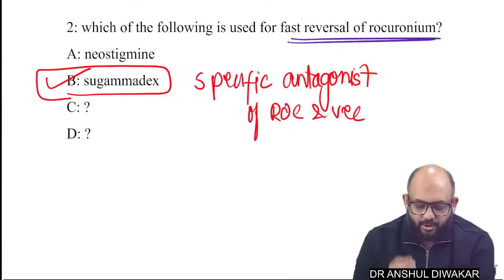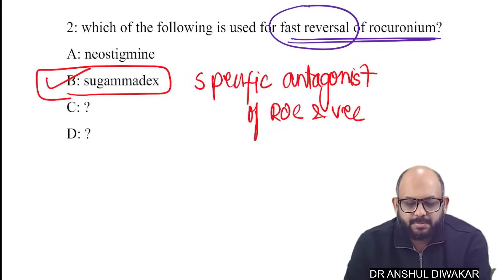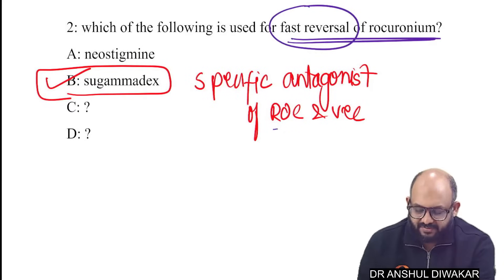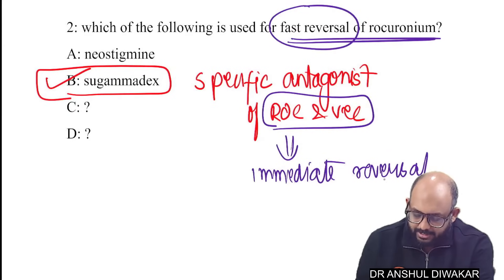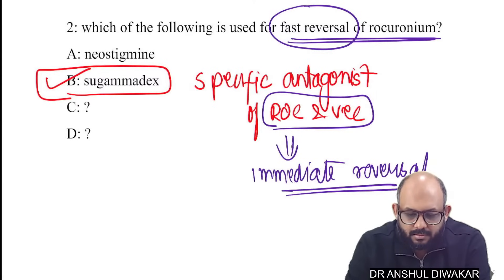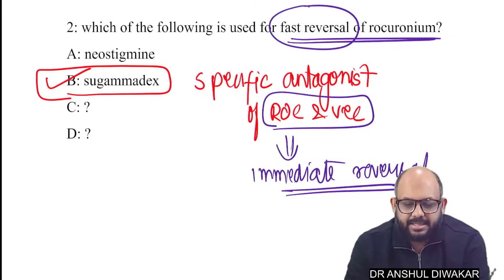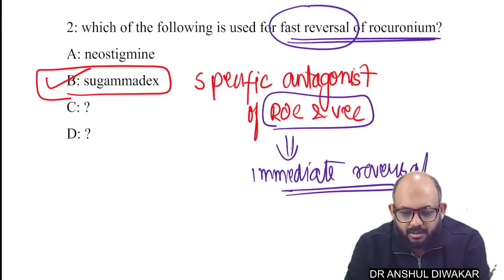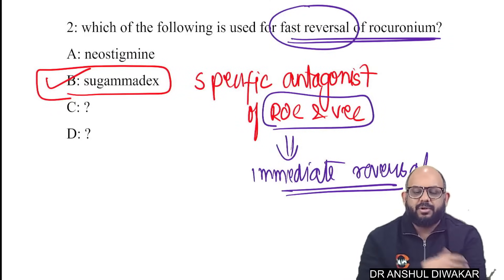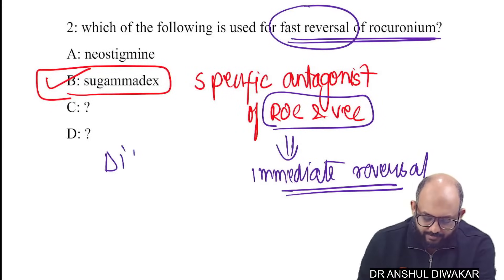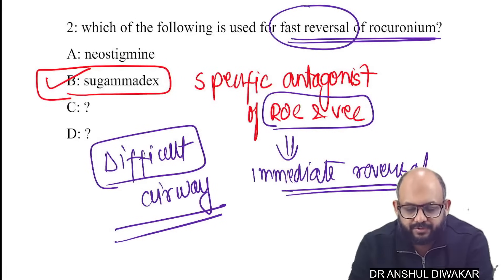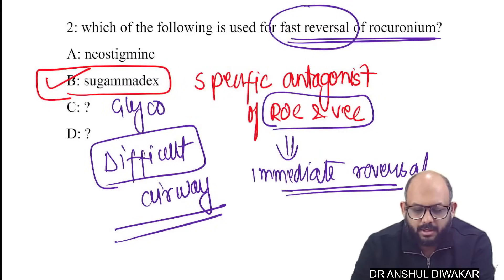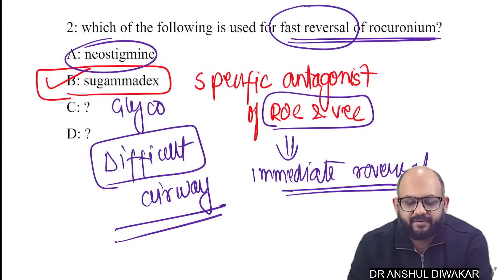Neostigmine was also in the options, but the question specifically mentioned fast reversal, which is why the answer is Sugammadex. Sugammadex causes immediate reversal because it is a scavenger molecule. As one student noted, the clinical scenario was: a patient was given rocuronium 90mg but intubation failed — in that difficult airway situation, you can immediately reverse rocuronium with Sugammadex and the patient will start breathing, giving you a margin of safety. Glycopyrrolate was also an option; it is used along with neostigmine to decrease muscarinic side effects.